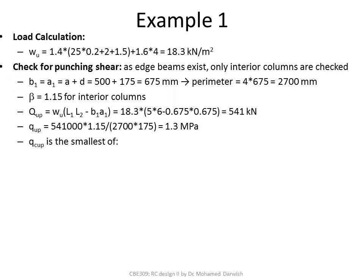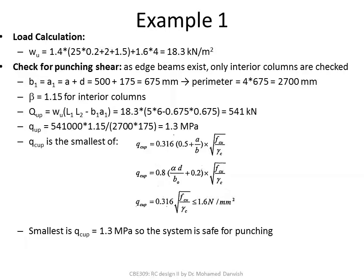Calculating the three punching shear strength equations using 0.316(0.5 + A/B)√(Fcu/γc), 0.8(αD/B₀ + 0.2)√(Fcu/γc), and 0.316√(Fcu/γc), the smallest value is 1.3 MPa — just equal to the punching shear stress. So this slab thickness is just sufficient. Had we taken a thinner slab or slightly higher loads, it would have failed.